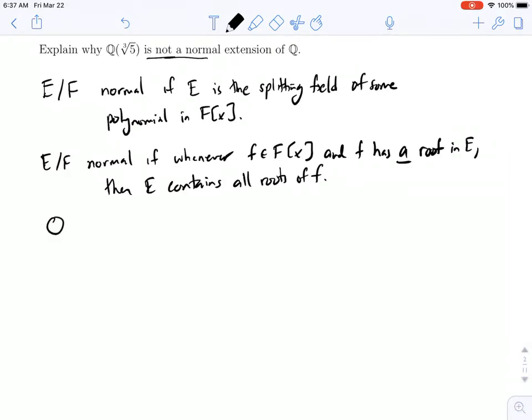In our case we're looking at where E is equal to Q adjoin the cube root of 5 and F is equal to Q. Now the tip off here is this cube root of 5. We know that the cube root of 5 is a root of x cubed minus 5, which is a polynomial with coefficients in Q.